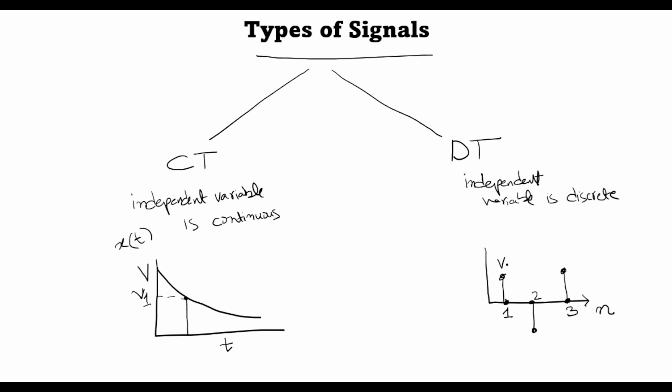So this amplitude here could be V1, this could be V2, this could be V3. So that's why discrete time signals are also sometimes referred to as sequences. Because the independent variable n is defined only at integer values. So n is usually an integer.